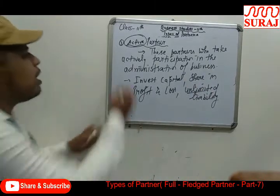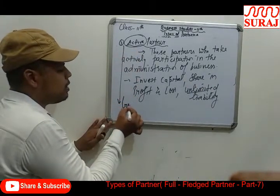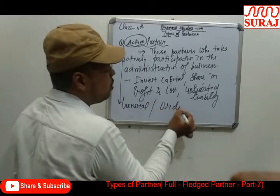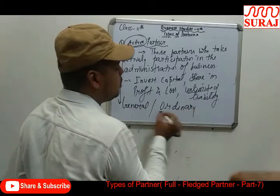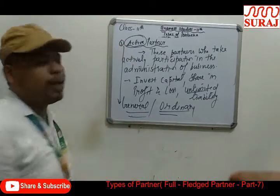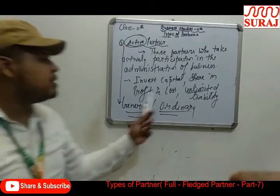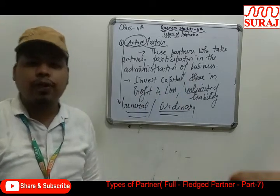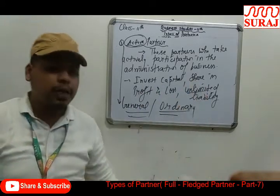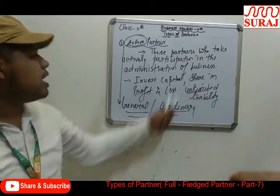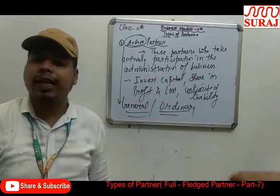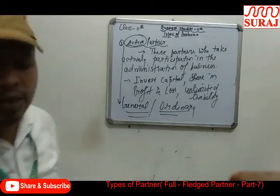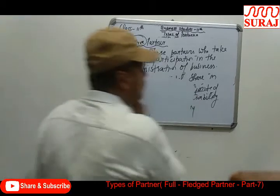The active partner fully participates in business activities. So the active partner's other names are general partner and ordinary partner — partners who invest money, share in profit and loss, have unlimited liability, and actively participate in the business.